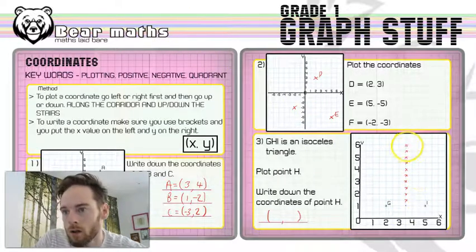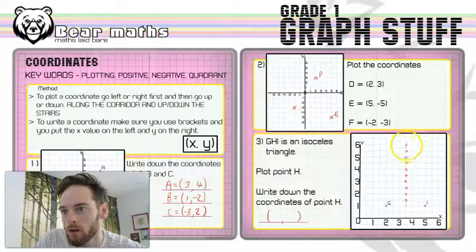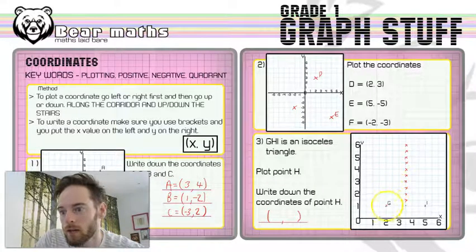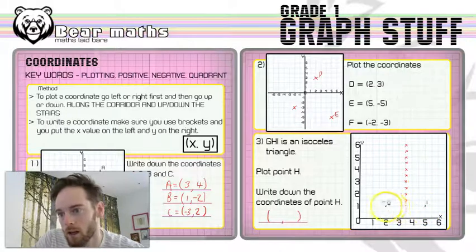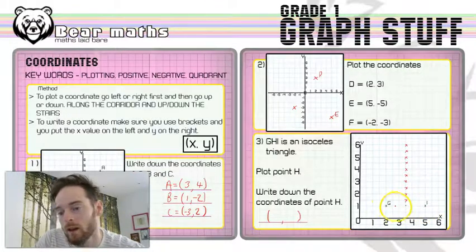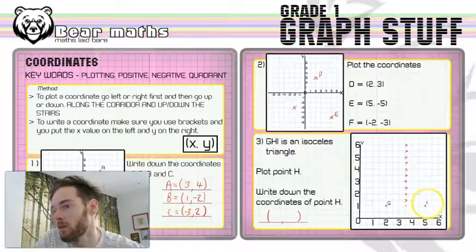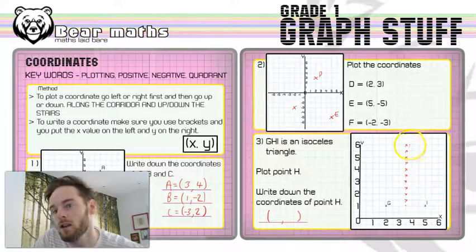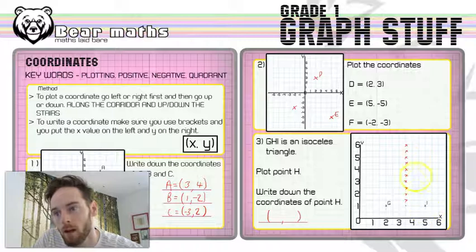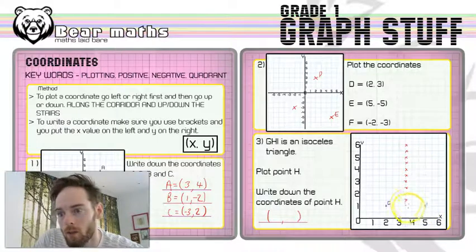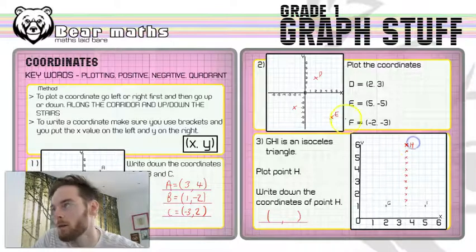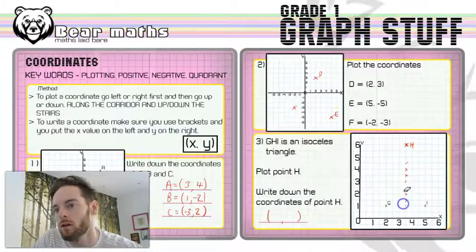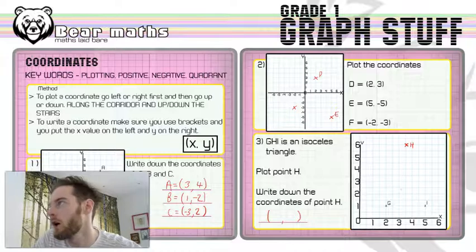I'm going to choose that top one because I know for certain that that length to g and that length to i is the same and I know it's definitely not the same as this. If it was the same as that one as well then we'd have an equilateral triangle not an isosceles one. Isosceles means two lengths that are the same. I'm going to choose that point at the top there. So I'm going to plot that point and call that one point h. I'm going to get rid of everything else that I've done because I was just showing you what the options were.